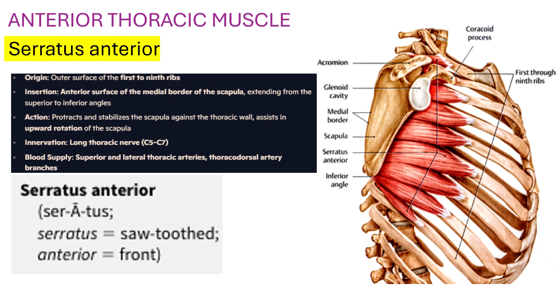Innervation is the long thoracic nerve, C5–C7. Blood supply is the superior and lateral thoracic arteries and thoracodorsal artery and branches. Serratus means sawtooth; anterior means front.